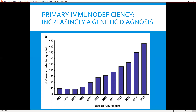Is the main concern for the patient infection or immune dysregulation? If it's infection, what kind of infections are we seeing — viral, fungal, bacterial, mycobacterial, or a mixture? If the patient has immune dysregulation, are the features autoantibody-driven? Is it lymphoproliferation? Is it granulomatous disease? Is it severe atopy? Or some mix of all of these?